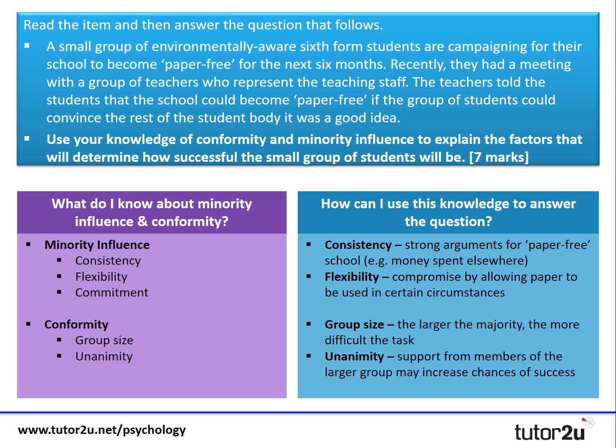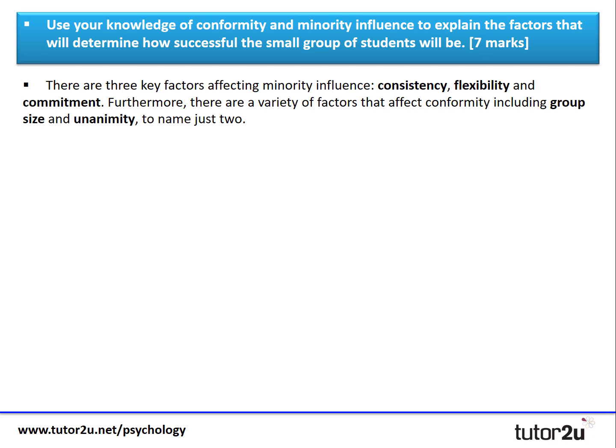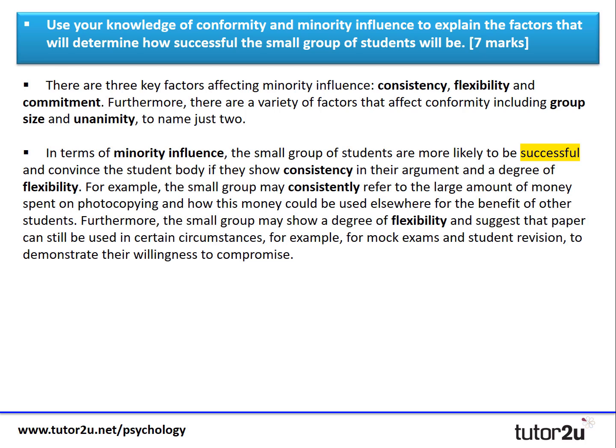Here's what I might write. I'd start with a small intro to guide the answer: there are three key factors affecting minority influence — consistency, flexibility, and commitment — and a variety of factors that affect conformity, including group size and unanimity. Then I'm going to break my answer in half: do the minority influence part first with full application, and then do exactly the same for conformity. This is a seven mark application question.